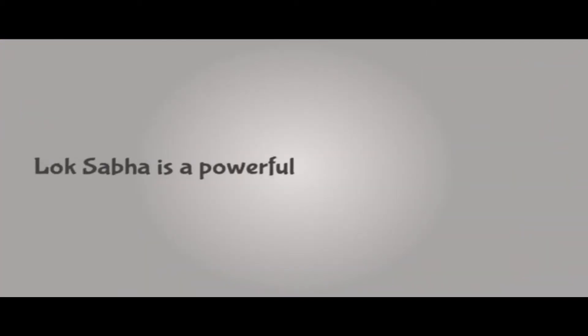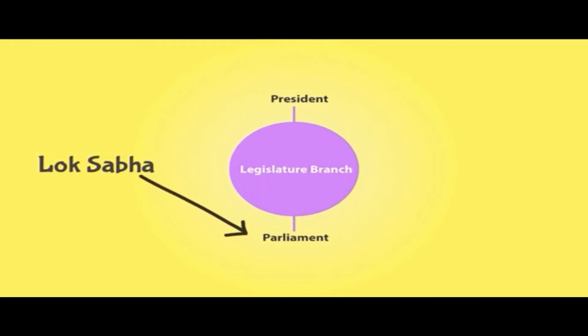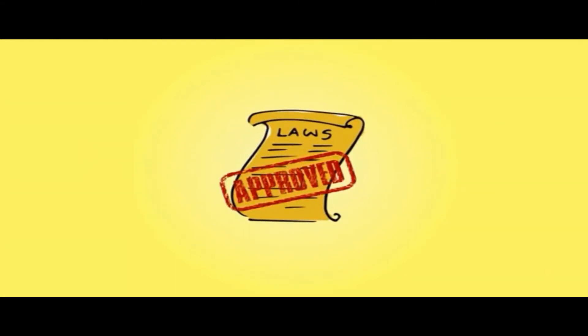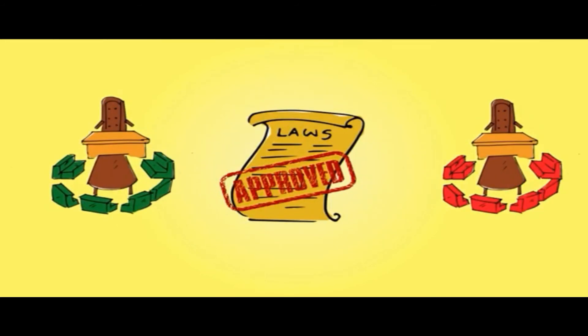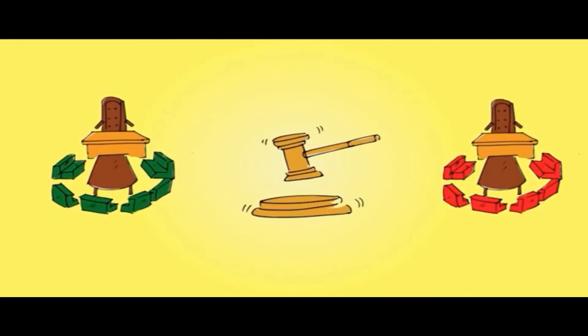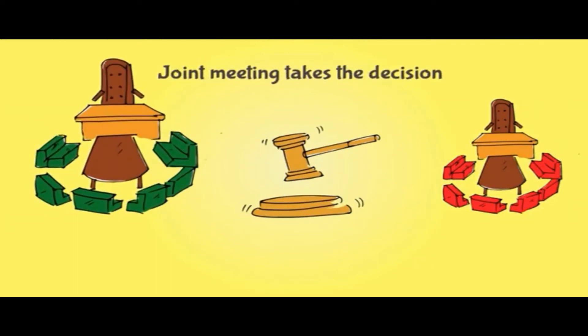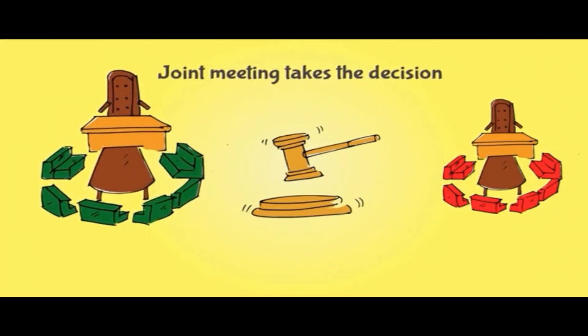The Lok Sabha is the powerful house of the Parliament. Why is that so? The Lok Sabha is a very important part of the legislature branch of the country, which contributes to making laws for the country. Any ordinary law needs to be approved by both the houses of the Parliament. The final decision is taken in a joint meeting of both houses, where the decision of Lok Sabha is likely to win because of its larger number of members than the Rajya Sabha.